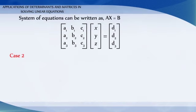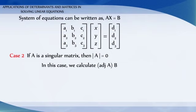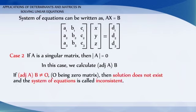Case 2: If A is a singular matrix, then its determinant value equals 0. In this case, we calculate adjoint of A into B. If adjoint of A into B is not equal to the zero matrix, then solution does not exist and the system of equations is called inconsistent.